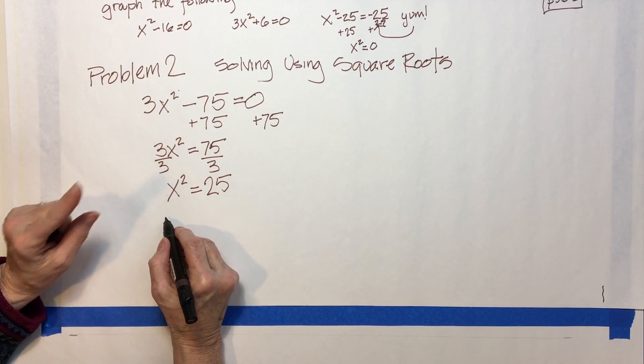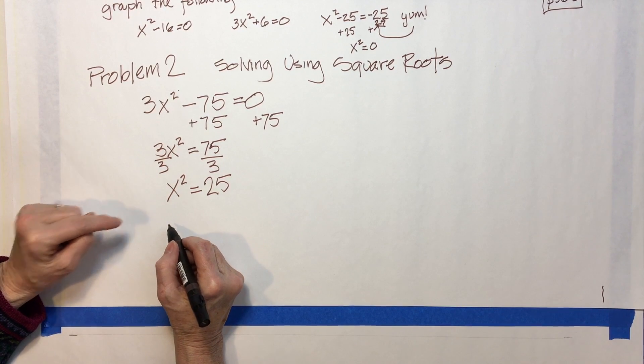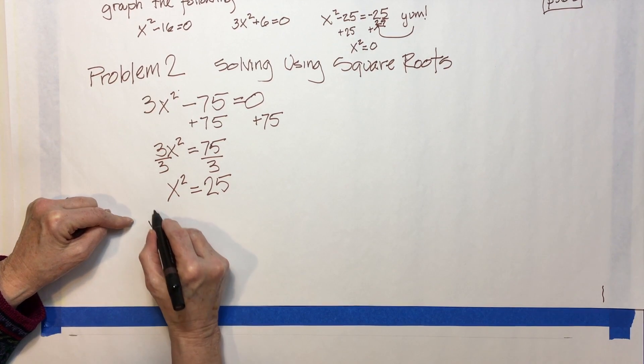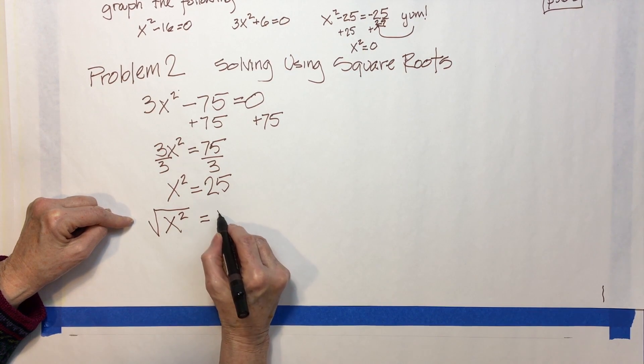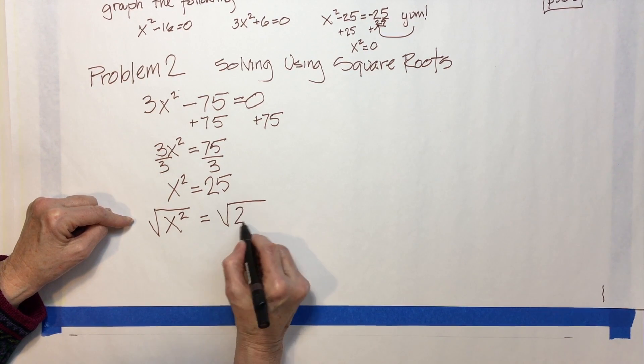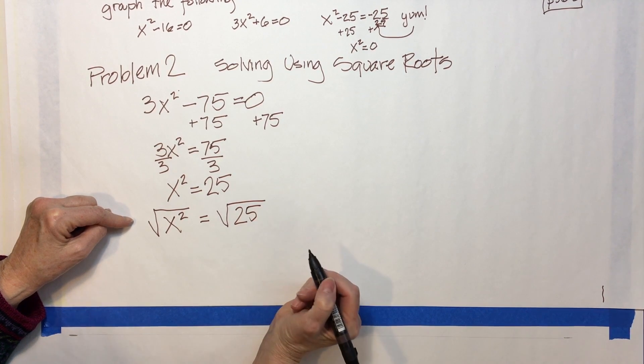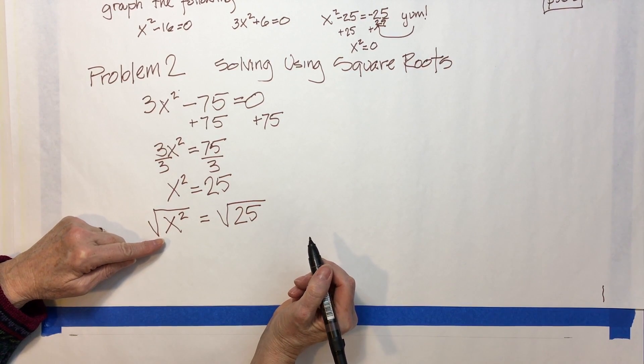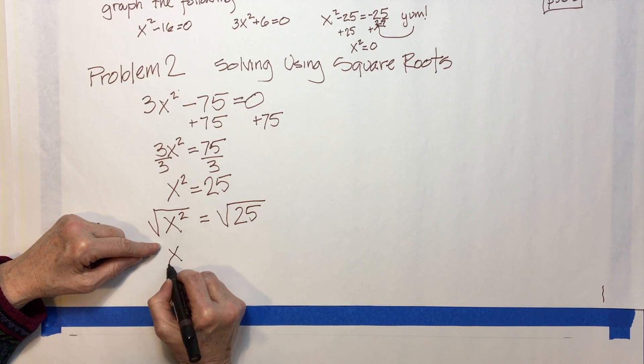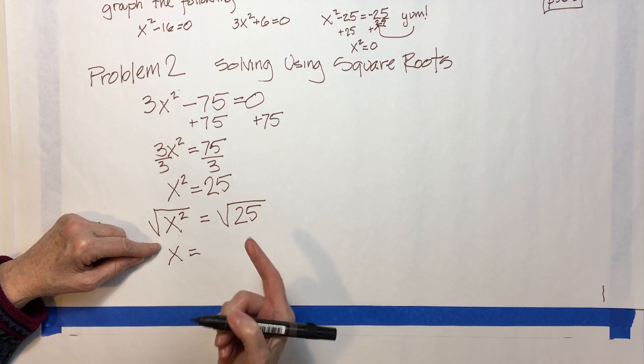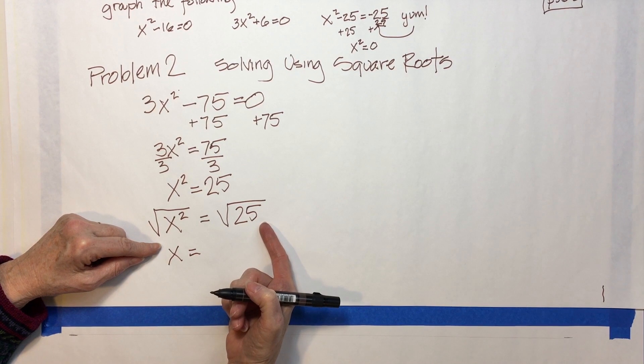So I am going to take the square root of both sides. Now, the square root of x squared is x, and the square root of 25 is 5.